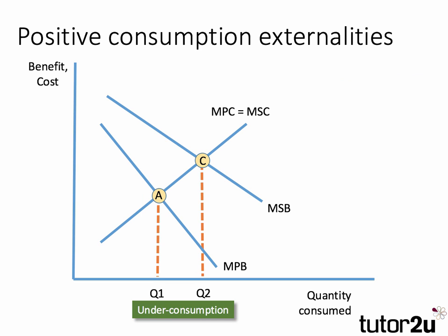With positive consumption externalities there is an external benefit from consumption. Although there's a private benefit as well, if we add in the external benefit the social benefit curve lies above the private benefit curve — with a diverging diagram suggesting those external benefits get bigger as quantity consumed goes up. The private optimum only considers private costs and benefits, giving us output A, whereas from a social perspective we actually want more of this product consumed, with Q2 being the more optimal position compared to Q1.